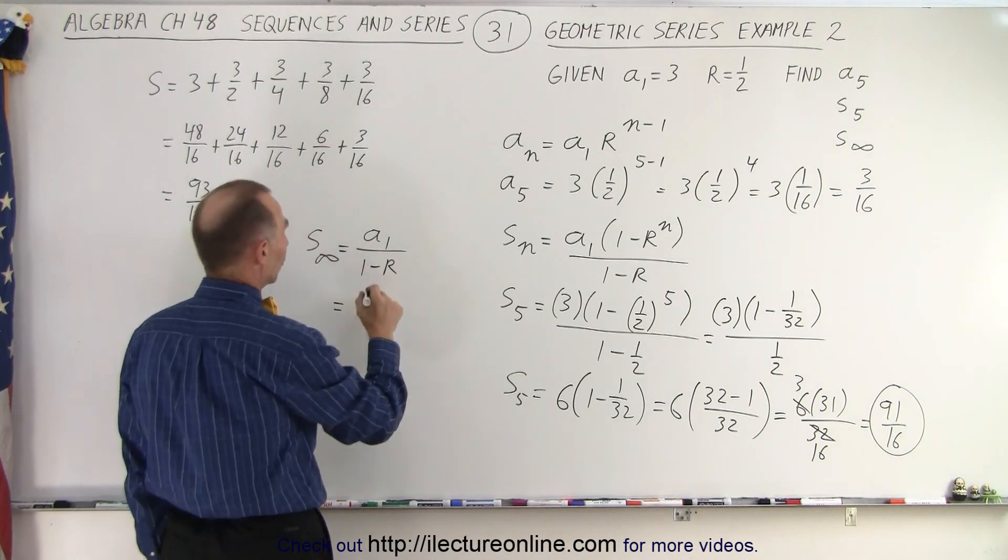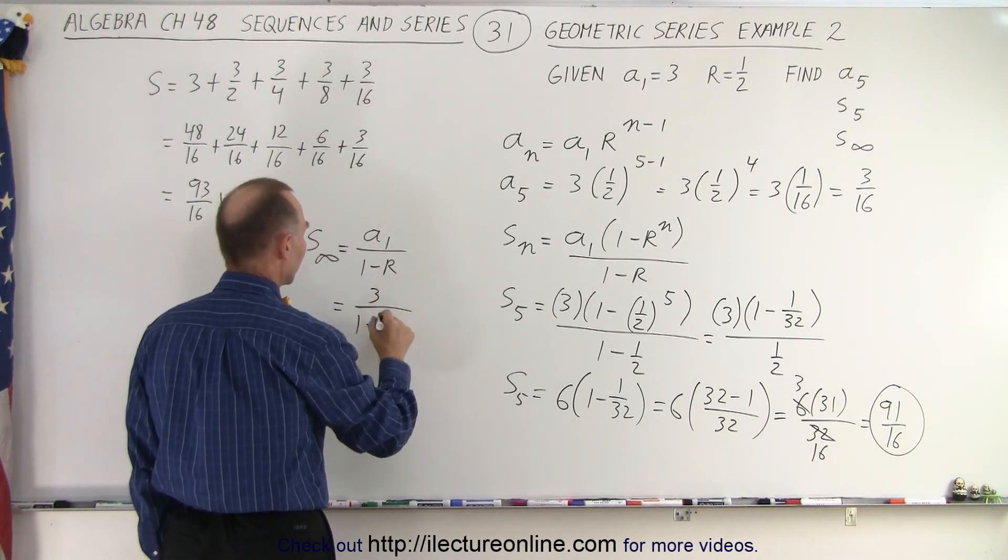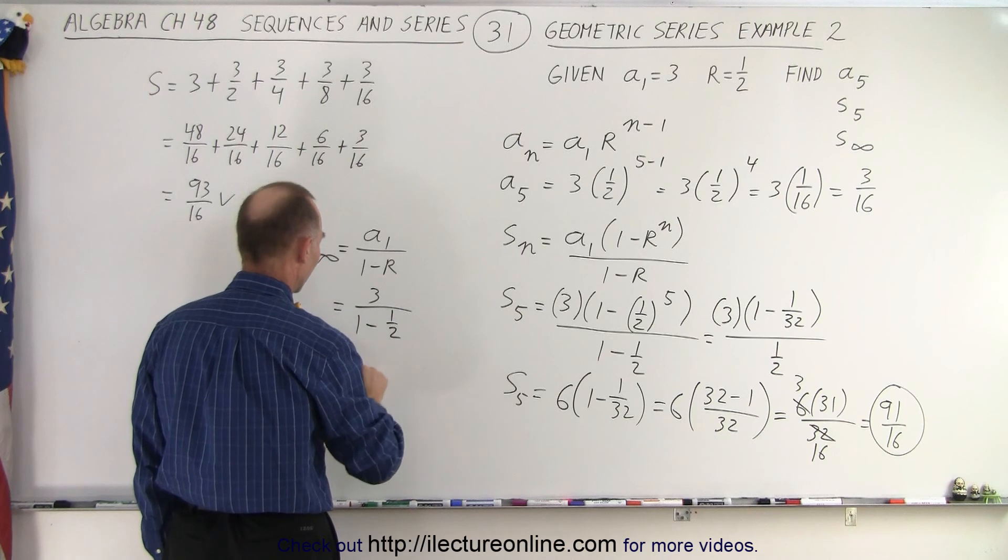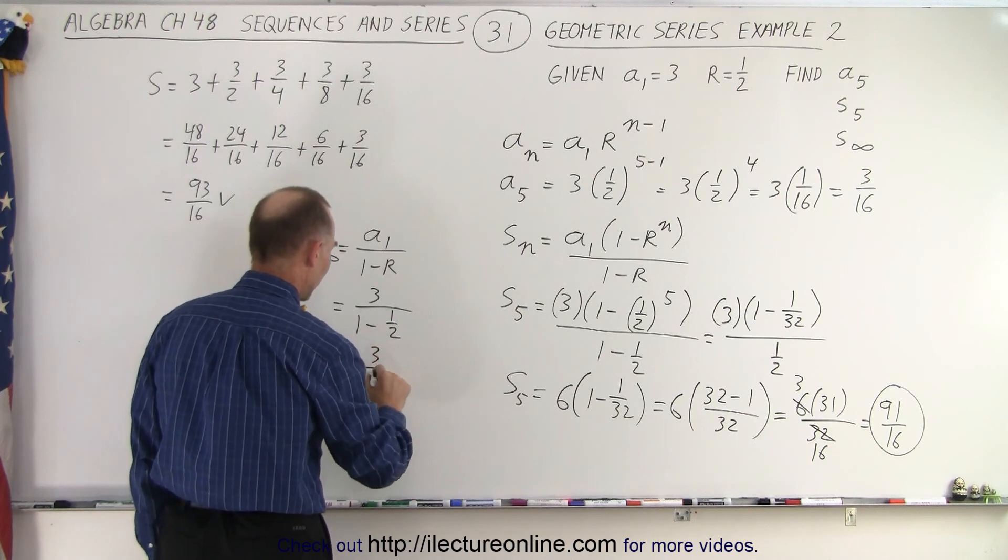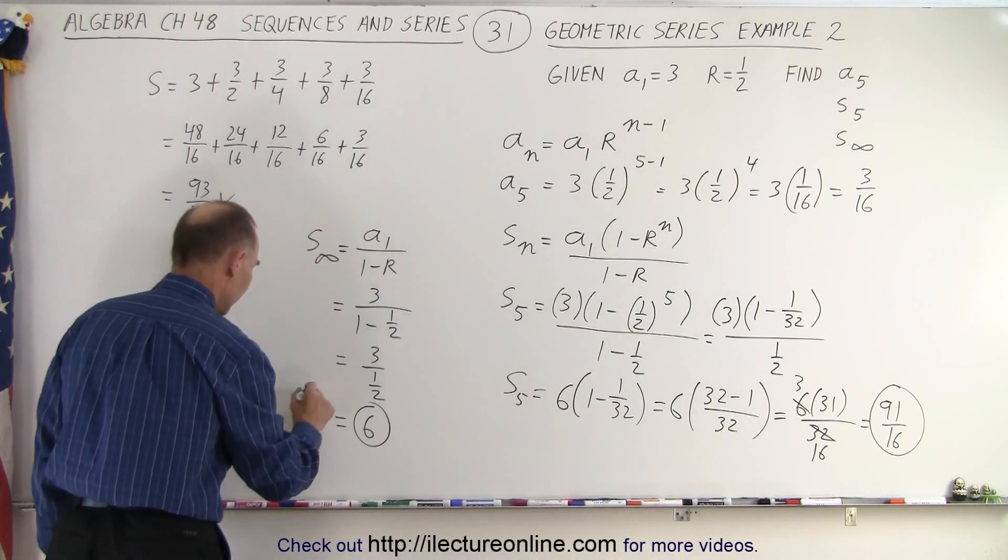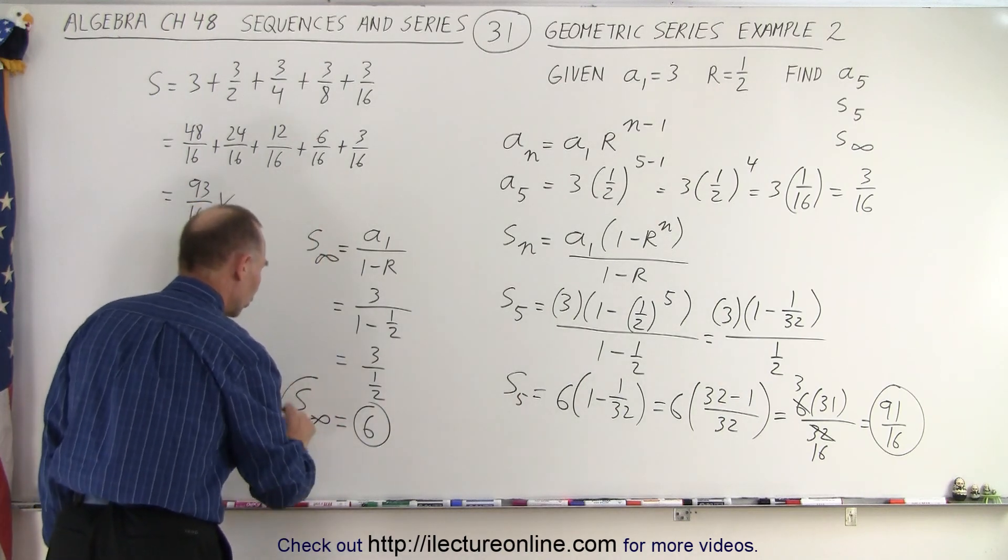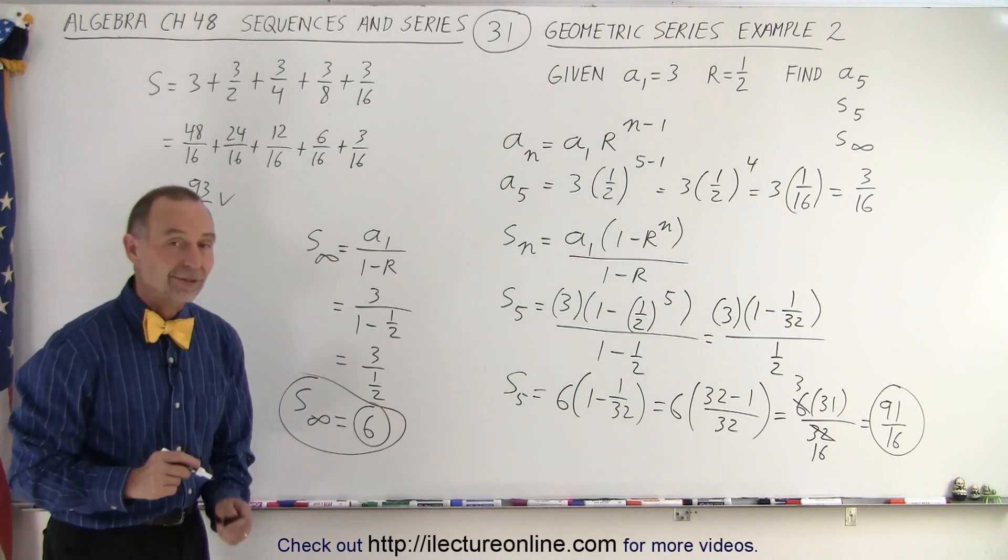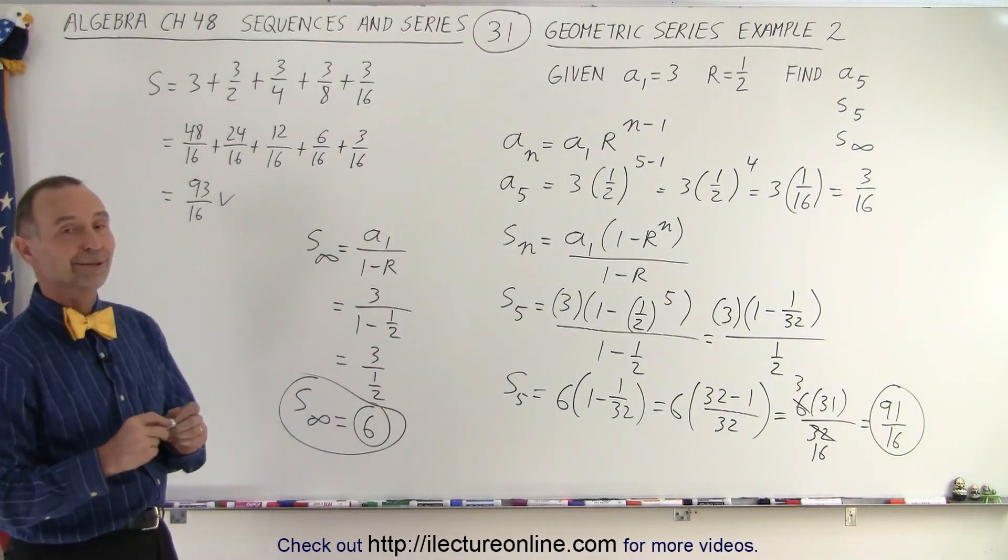So in this case, a sub 1 is 3 divided by 1 minus the common ratio is 1 half. So this is equal to 3 divided by 1 half. And so that's equal to 6. The total sum of all the terms out to infinity add up to 6. And that is how it's done.